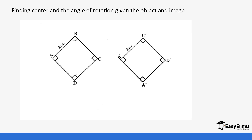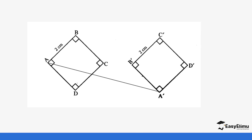In this case, we are looking for the center and the angle of rotation when you're given the object and the image. You have not been given any center and you have not been given any angle — so where do you start? You have been given A, B, C, D and A prime, B prime, C prime, and D prime. Make sure you have your mathematical set — that is, a protractor, compass, and ruler — as you need them for this question.